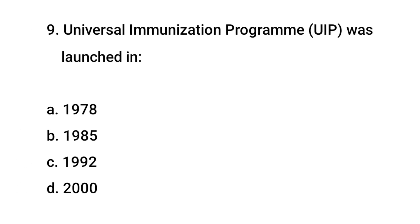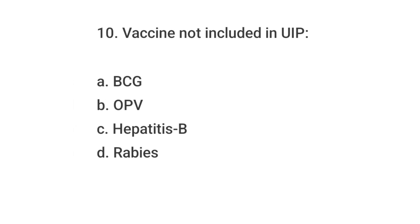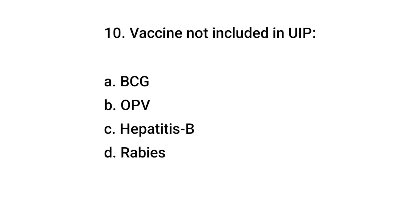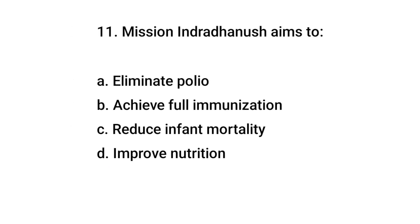Question number 9: Universal Immunization Program was launched in — the right answer is B: 1985. Question number 10: Vaccine not included in UIP — the right answer is D: Rabies. Question number 11: Mission Indradhanush aims to — the right answer is B: Achieve full immunization.